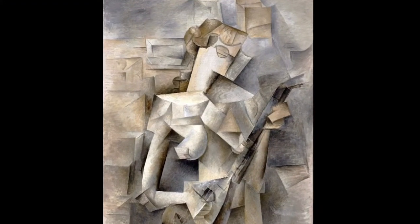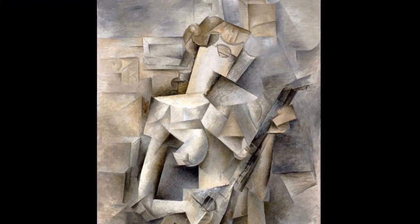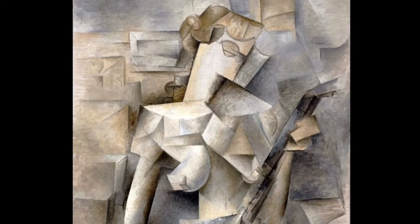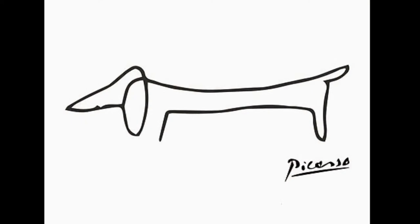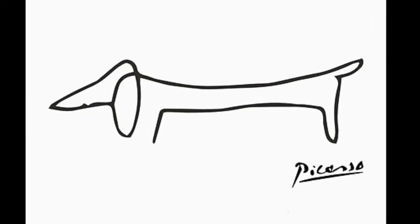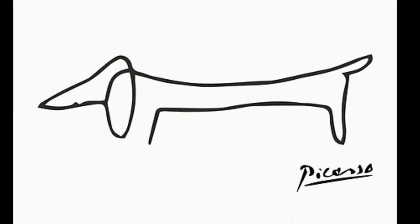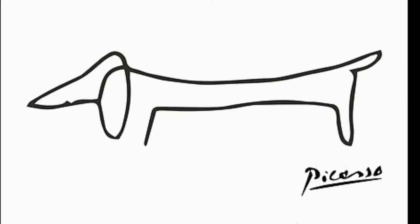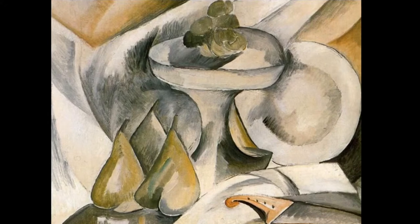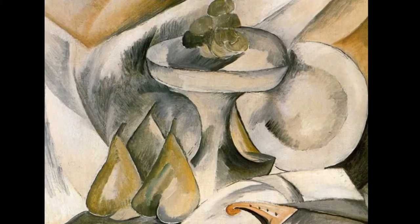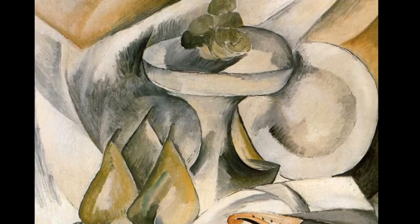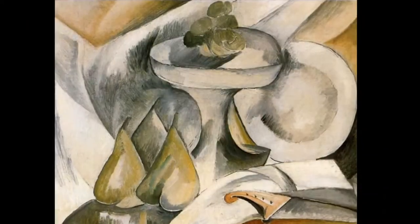Cubism was one of the most influential styles of the 20th century and even had an influence with war. It opened up almost infinite new possibilities for the visual reality in art. The Cubist painters rejected the concept that art should copy nature or that artists should adopt traditional techniques. The artists emphasized the two-dimensional flatness of the canvas instead of creating the illusion of depth.